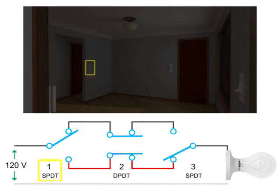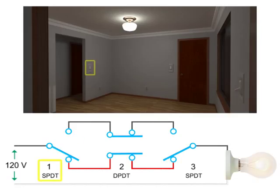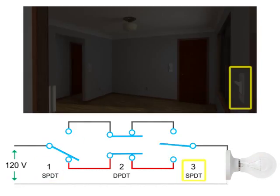Placing switch one now in the down position and switch three in the up position also results in a broken circuit, and current is unable to flow freely to the light bulb.